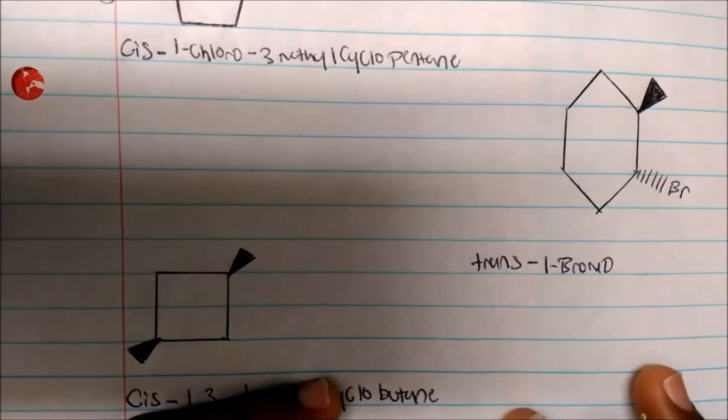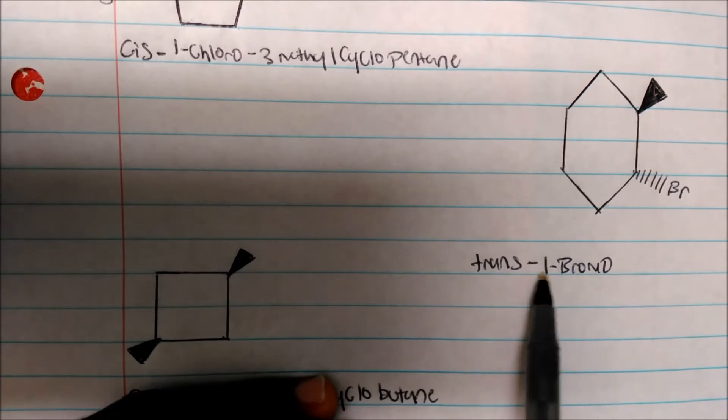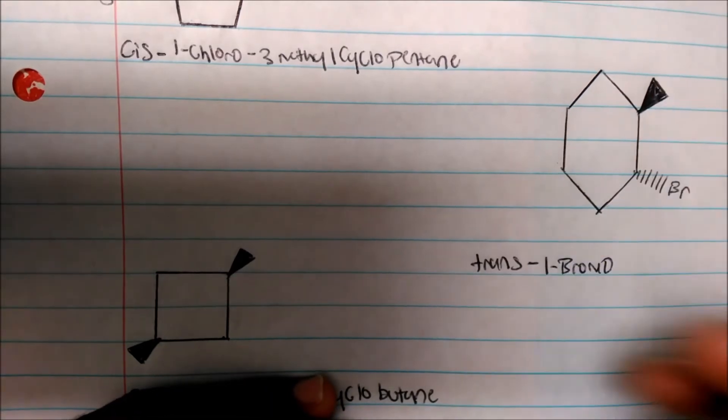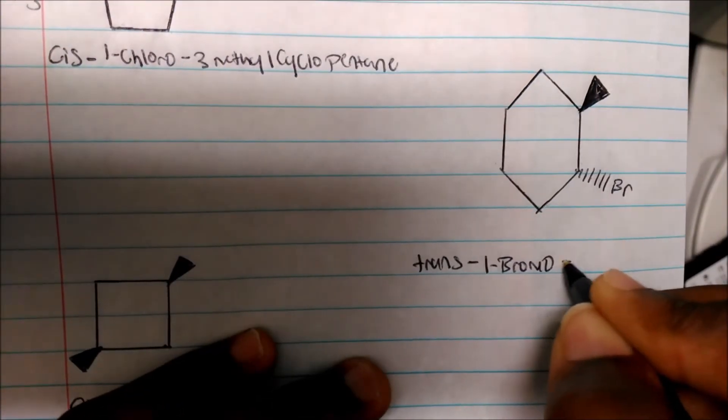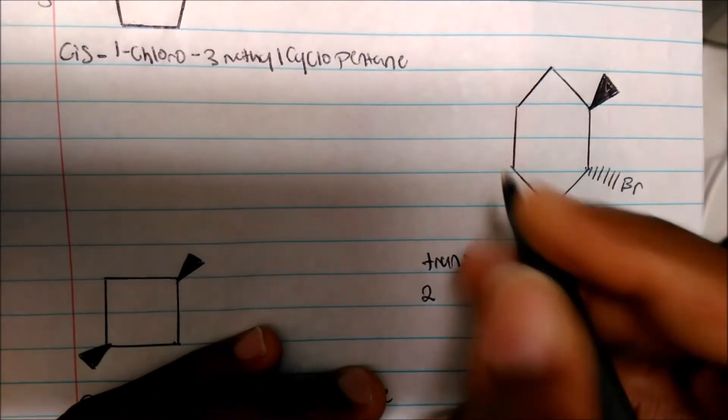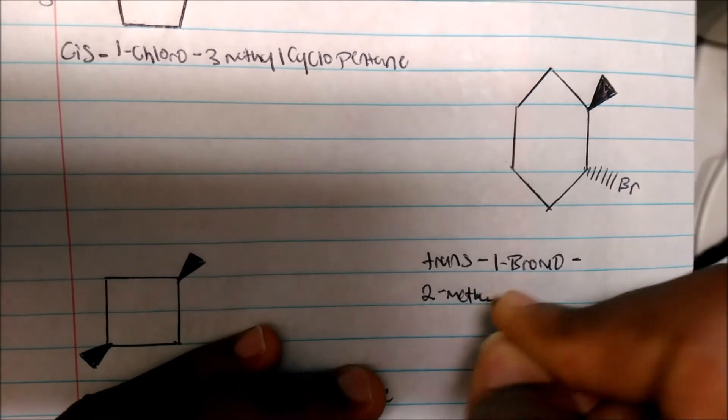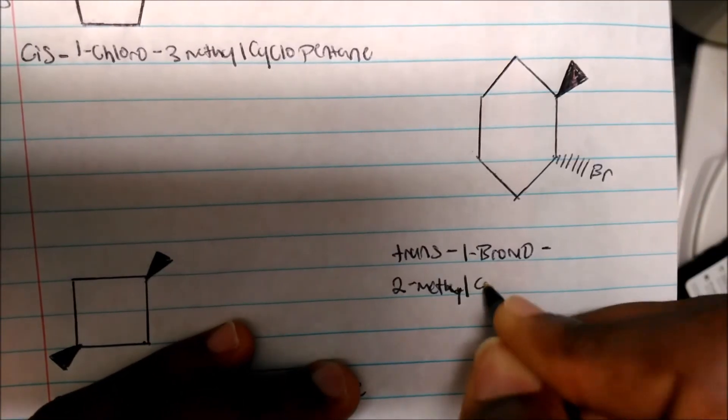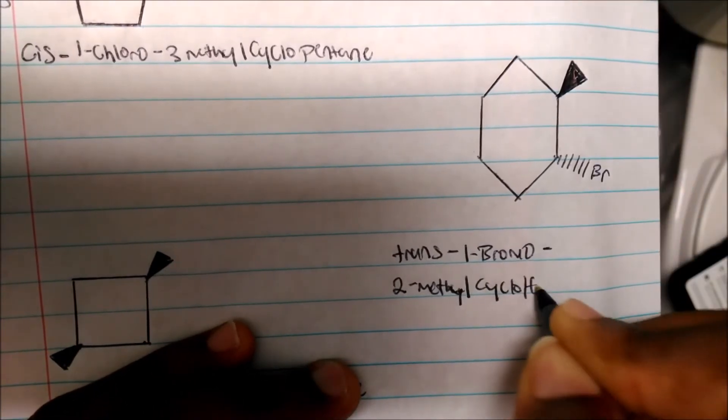So, this will be trans-1-bromo. I'm running out of space here, so I'm just going to write underneath. Forgive me. So, one dash, well, trans-1-bromo-2-methyl-cyclohexane.